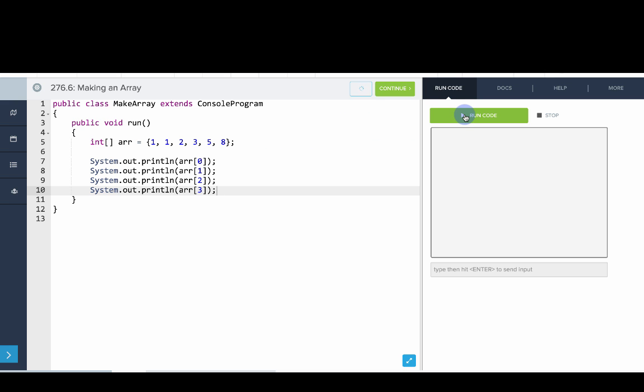And let's print out ar of three. So this shows an example of creating an array and then printing out the values by accessing the elements at different indices.